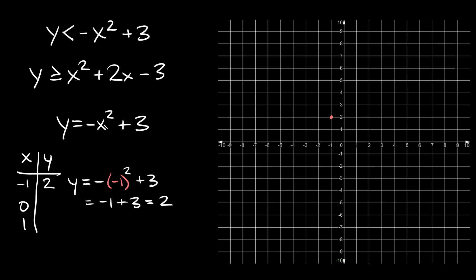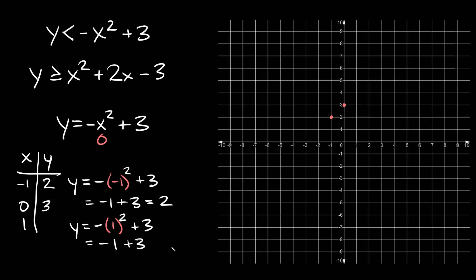The next point: if we plug in zero for x, we get negative zero squared which is just zero, so y equals zero plus three, which is just three. So zero, three is right there. And lastly, if we plug in one, we get y equals negative one squared plus three. One squared is one, so negative one plus three equals two. So one, two.